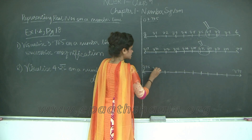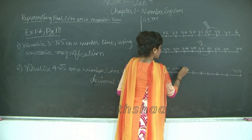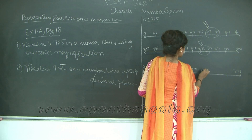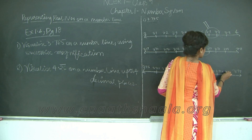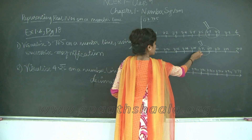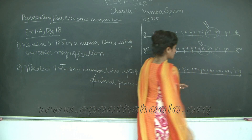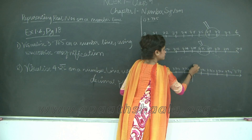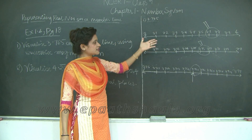So this gives us 3.761, 3.762, 3.763, 3.764, 3.765, 3.766, 3.767, 3.768, and 3.769. I draw dotted lines to indicate magnification of the interval 3.76 to 3.77, and I need to plot 3.765. Here I have located 3.765 on my number line. Therefore we have used successive magnification to locate the rational number 3.765 on the number line.